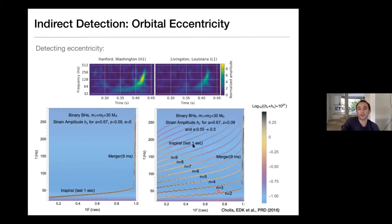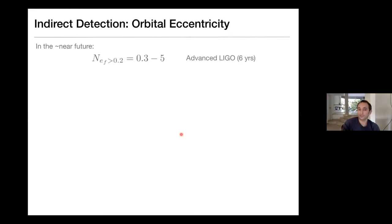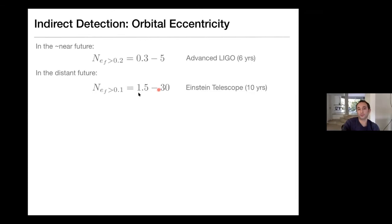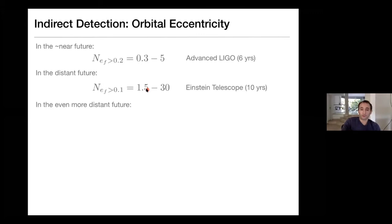With LIGO, you don't have very high sensitivity because you only see the last cycles of the inspiral and the signal-to-noise is not that good. Maybe a handful of events will be detectable with large enough eccentricity. In the distant future, the Einstein Telescope — which would be underground and more sensitive than LIGO — might be able to detect on the order of a dozen events or so with traces of eccentricity.